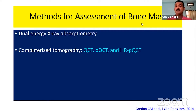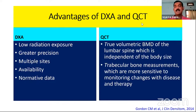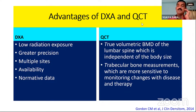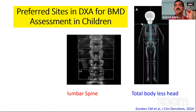Methods for assessment of bone mass include dual energy X-ray absorptiometry (DEXA), as in adults, but we can also use quantitative CT, peripheral quantitative CT, and HRPQCT. DEXA is preferred because of much lesser radiation exposure compared to QCT, greater precision, ability to assess multiple sites, wider availability, and more normative data. However, QCT is more accurate for measuring true volumetric BMD, which is of great use especially in short children, though we commonly use DEXA even in those cases.